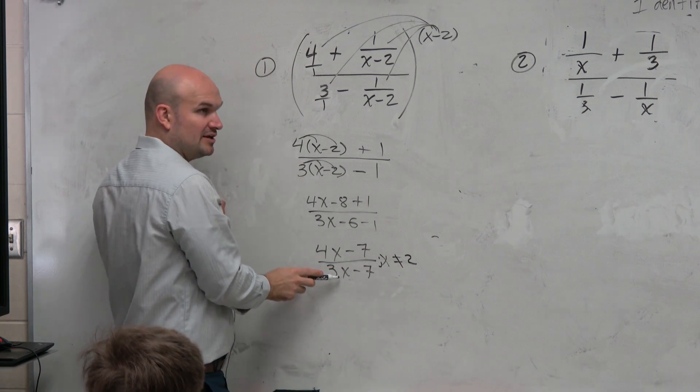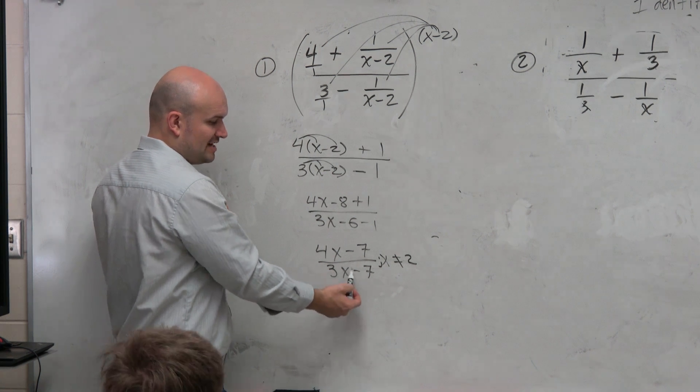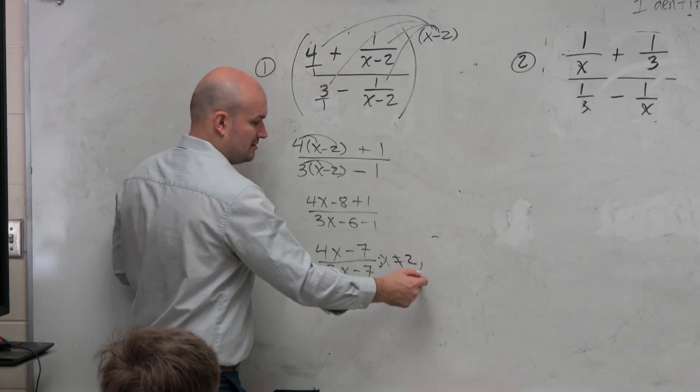And then what about here? What value can x not equal? Well, what happens when we set 3x minus 7 equal to 0? We get 7 thirds.